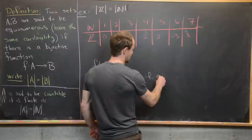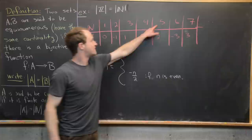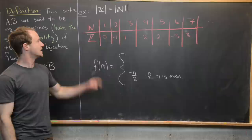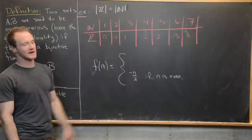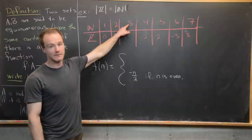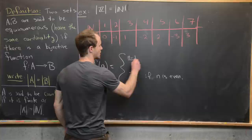Now we just have to figure out what happens if n is odd. Notice: 1 gets mapped to 0, 3 gets mapped to 1, 5 gets mapped to 2. If you look carefully, the integer mapped to by the natural number is what you get if you take one away from the natural number and divide by two. So 1 minus 1 over 2 is 0; 3 minus 1 over 2 is 1; 5 minus 1 over 2 is 2; 7 minus 1 over 2 is 3. So we put f(n) equals (n−1)/2 if n is odd.